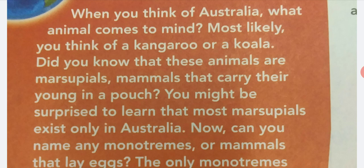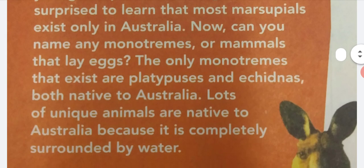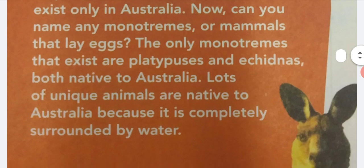You might be surprised to learn that most marsupials exist only in Australia. Can you name any monotremes, or mammals that lay eggs? The only monotremes that exist are platypuses and echidnas, both native to Australia. Lots of unique animals are native to Australia because it is completely surrounded by water.